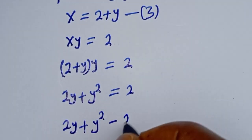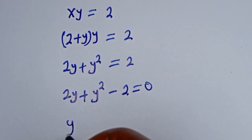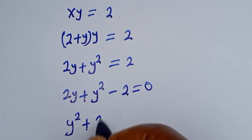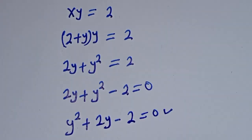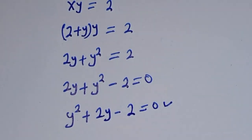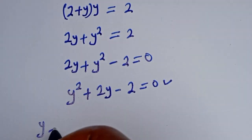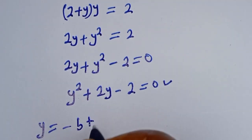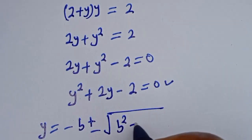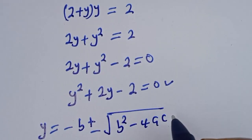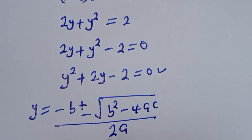Rearranging: y squared plus 2y minus 2 equals 0. This is a quadratic equation. Let's solve it using the quadratic formula: y is equal to minus b plus or minus the square root of b squared minus 4ac, all over 2a.